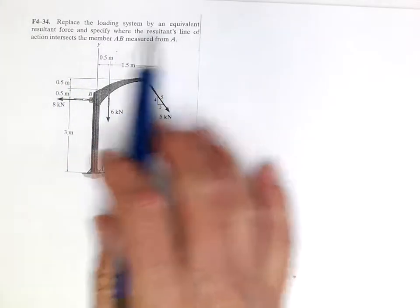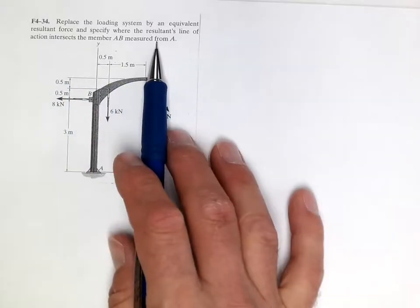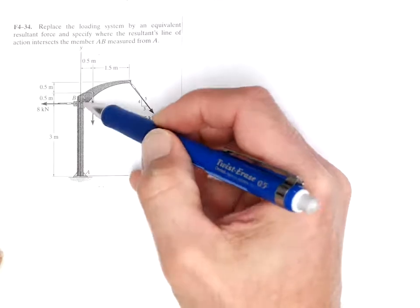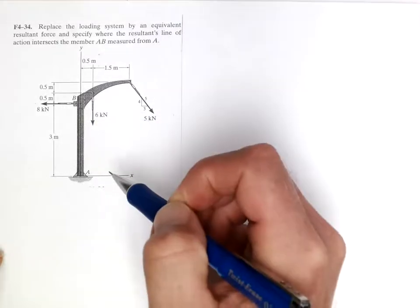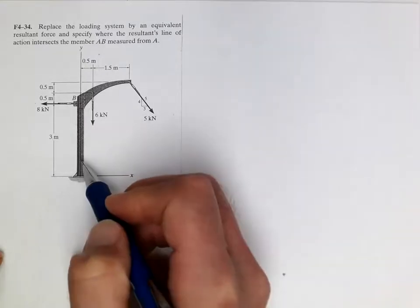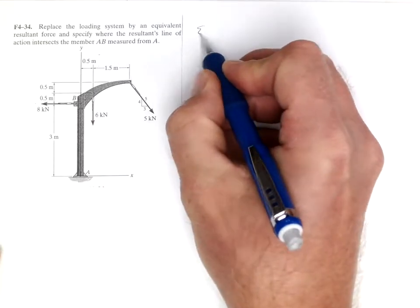Replace the loading system by an equivalent resultant force and specify where the resultant line of action intersects the member AB from A. So we're going to take these three forces, add them together, and we're going to get a force acting somewhere on here that causes the same moment at A. First, let's sum the forces in the x direction.